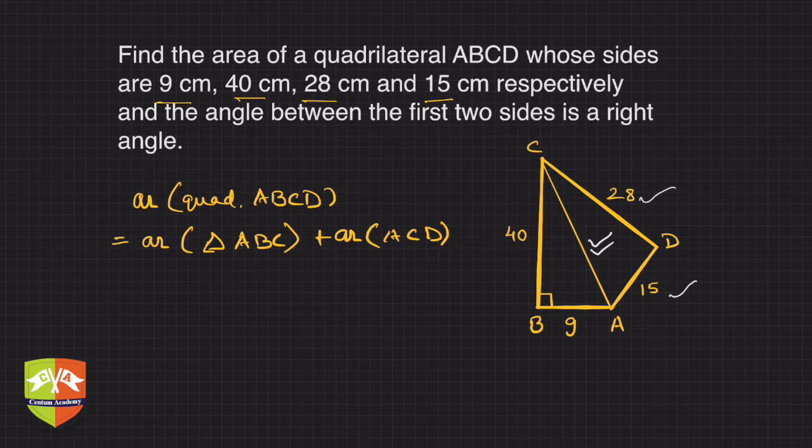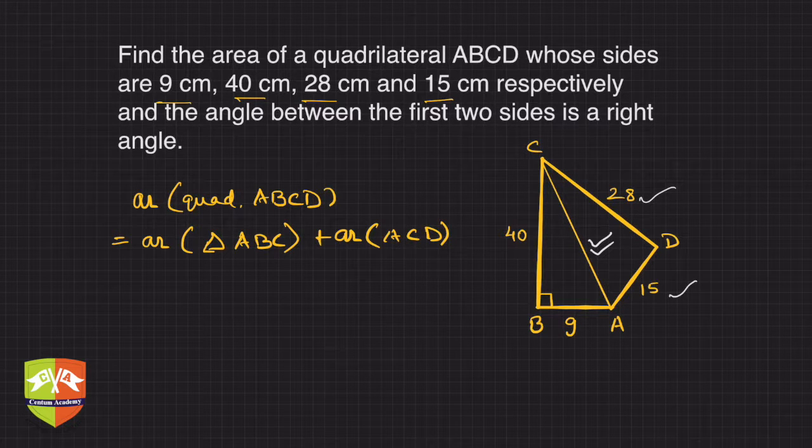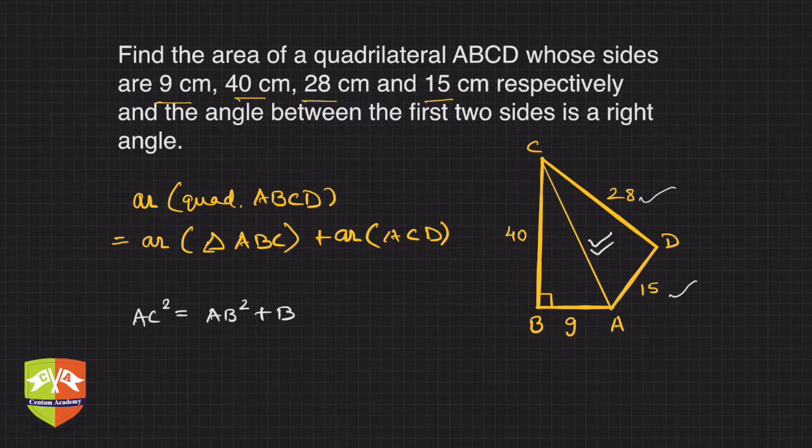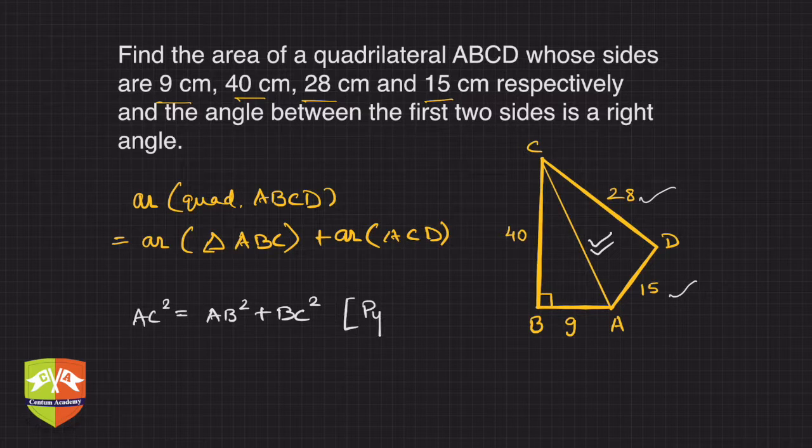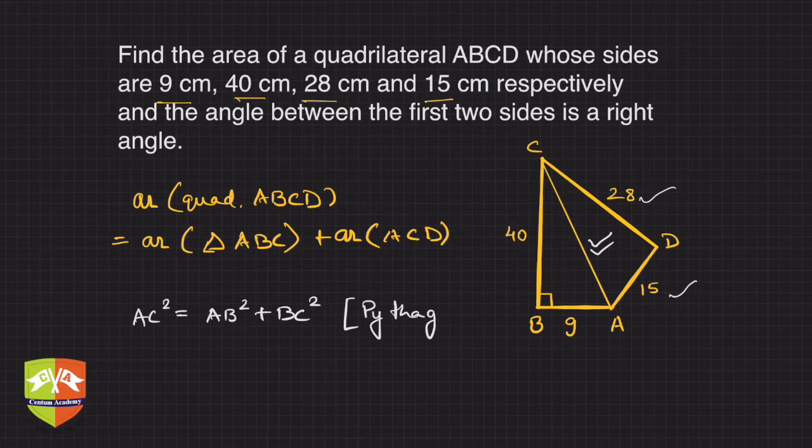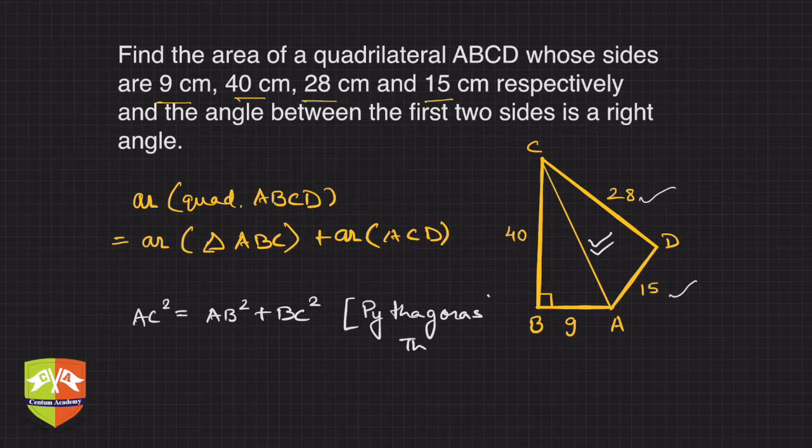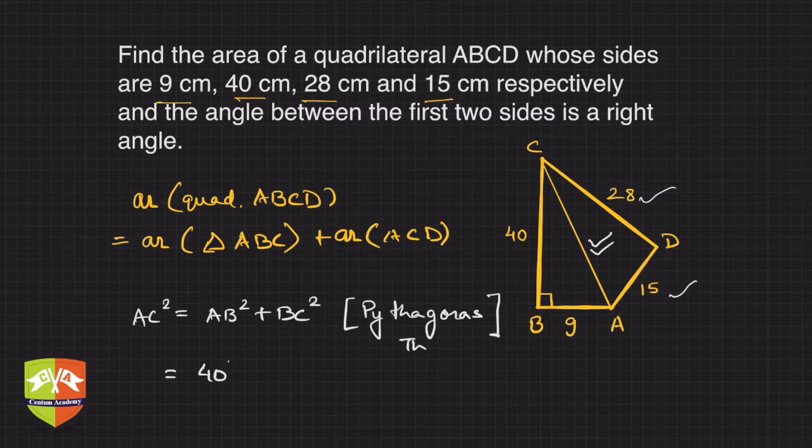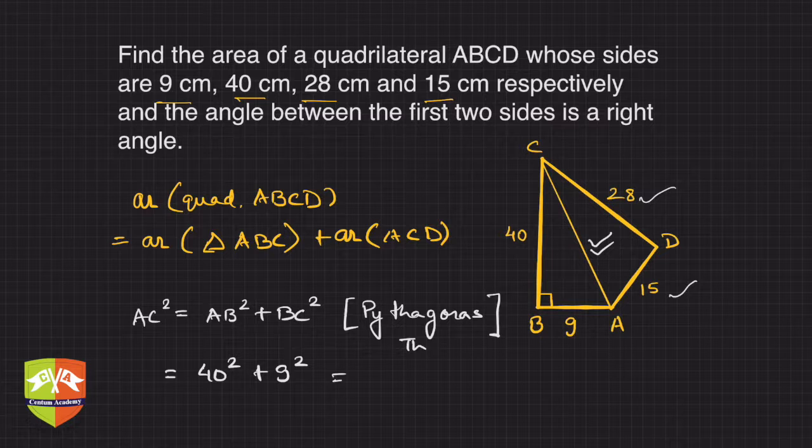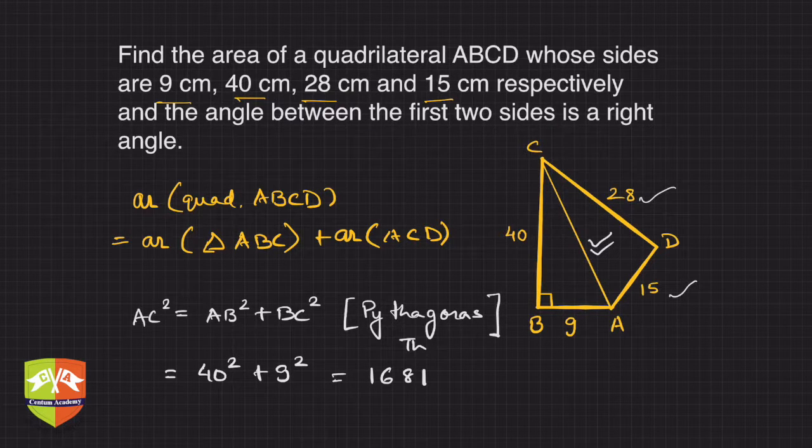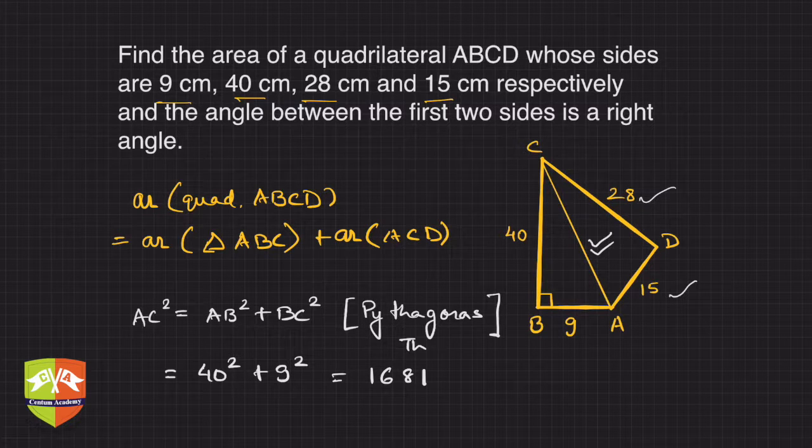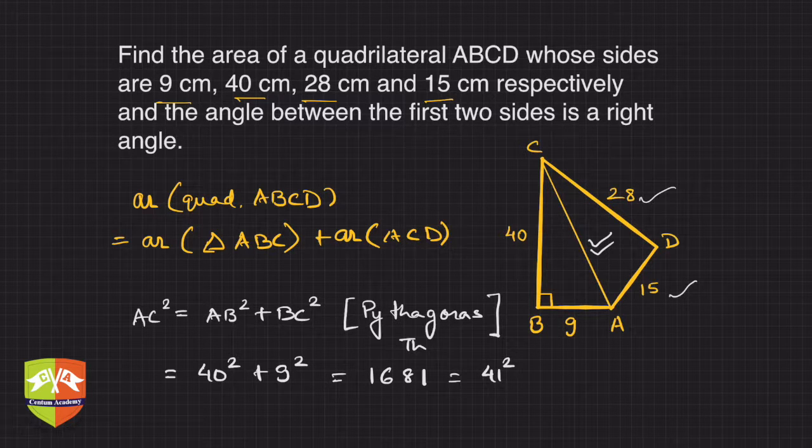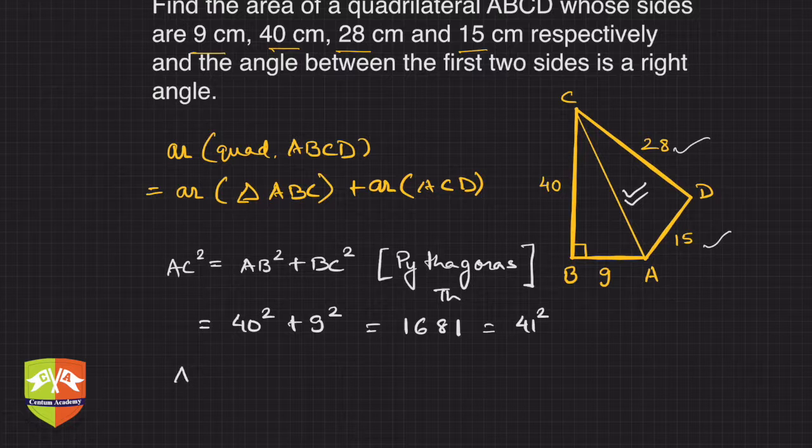Let's find the value of AC. AC squared equals AB squared plus BC squared by the famous Pythagoras theorem. So AC squared is 40 squared plus 9 squared, which is 1681.